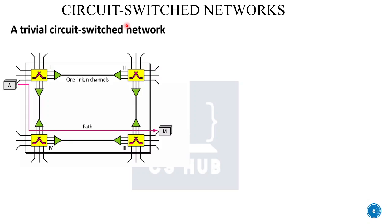For example, in a trivial circuit switched network, there are two devices A and M. A will communicate with M through 4 switches. There are several channels in each link with dedicated links. When system A needs to communicate with M, A sends a setup request that includes the address of system M to switch 1. Switch 1 finds a dedicated channel to switch 4, and switch 4 finds a dedicated path to switch 3. Switch 3 informs system M of the intention of A, and M sends an acknowledgement back, meaning the connection is established.